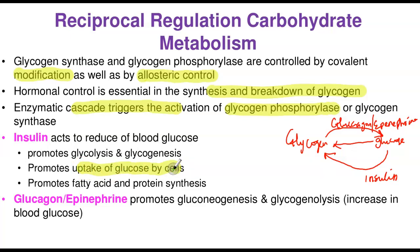Number three, insulin can promote the uptake of glucose by cells, so instead of glucose lingering in the blood — as in cases of diabetes mellitus — cells take up and metabolize the glucose via glycolysis. Insulin also promotes synthesis of fatty acids, since pyruvate from glucose metabolism is converted to acetyl-CoA, the first product in fatty acid synthesis, and also promotes protein synthesis through intermediates like alanine derived from pyruvate.